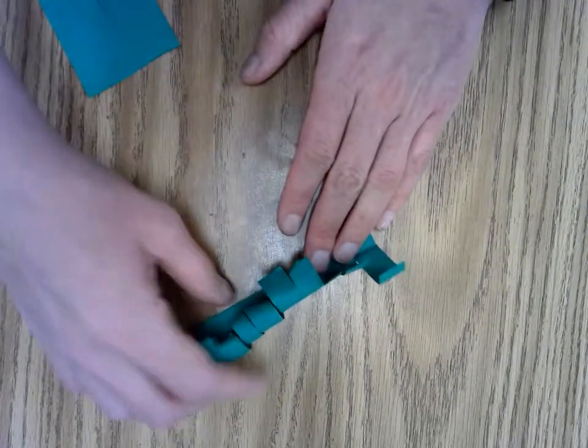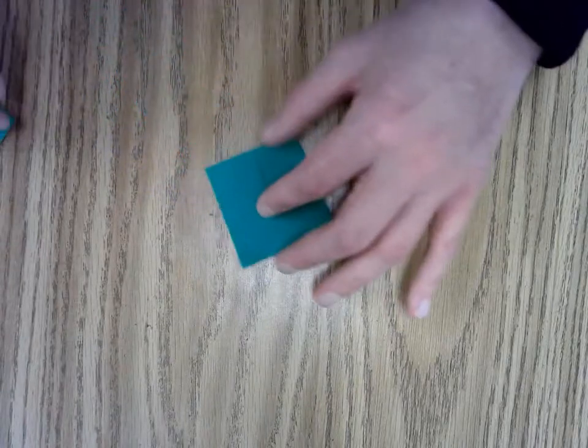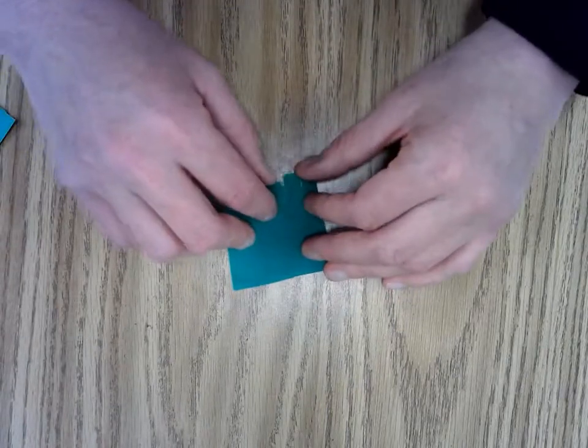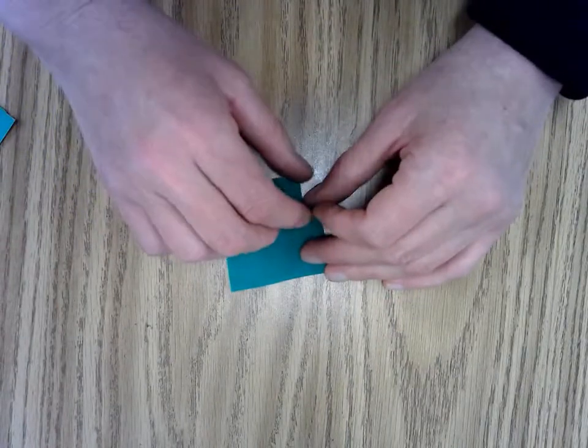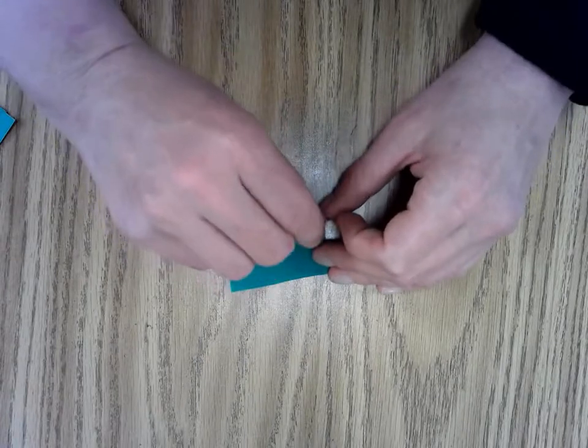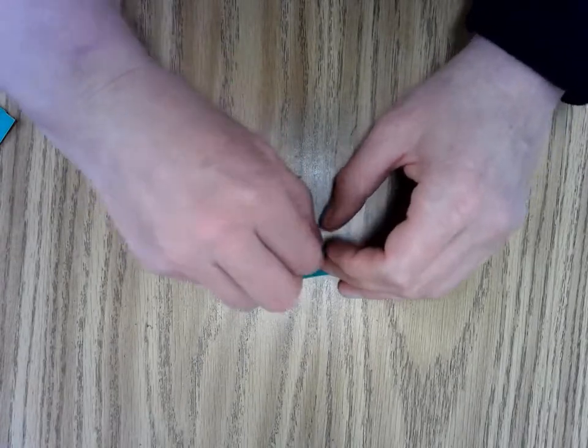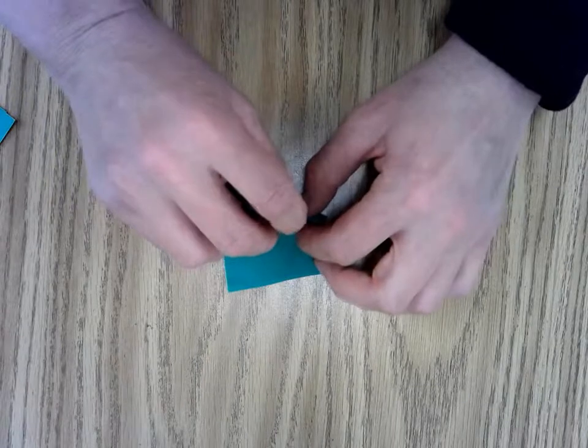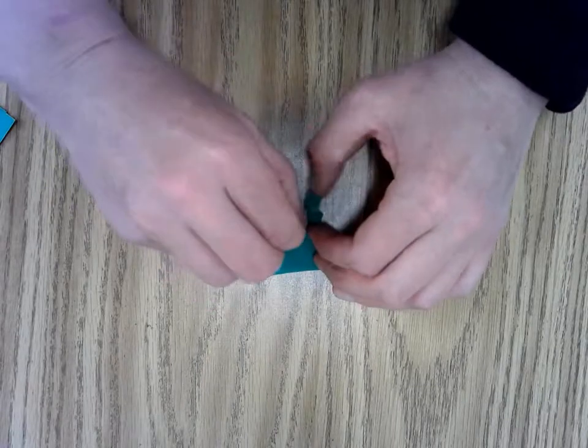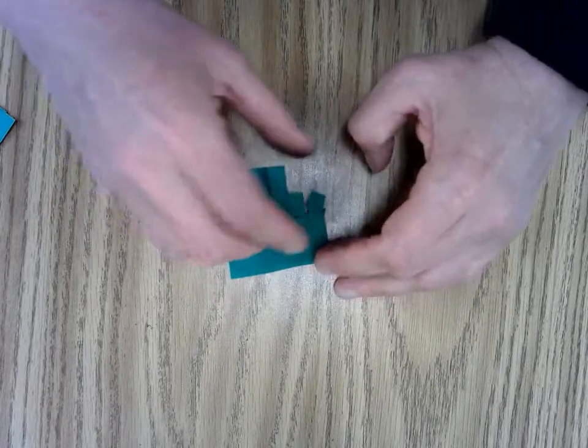Now another technique you can do with fringe is to make an accordion pleat, in which case you take one of the strips and you just go back and forth in an accordion fold in order to get some pleats.